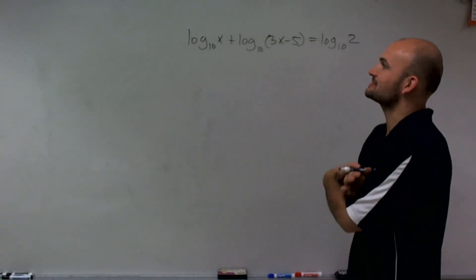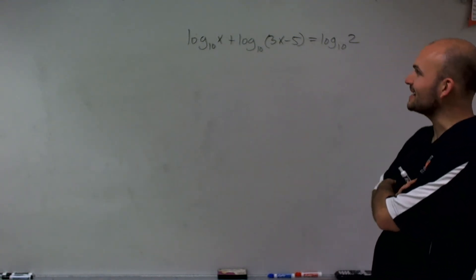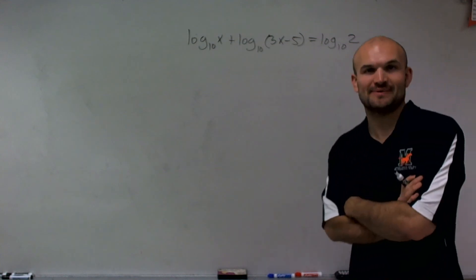Here we go. So what I have is log base 10 of x plus log base 10 of 3x minus 5 equals log base 10 of 2.